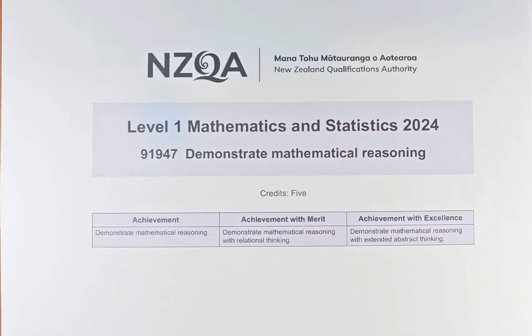Good day! In this video, we are going to do the Level 1 NCEA Mathematics and Statistics paper titled Demonstrate Mathematical Reasoning. Paper title is 91947.